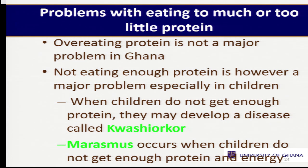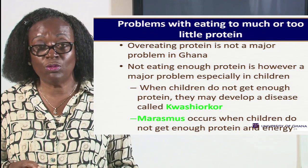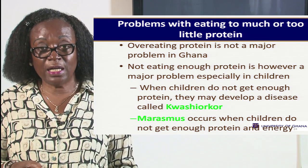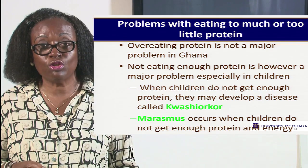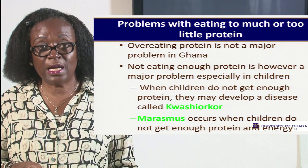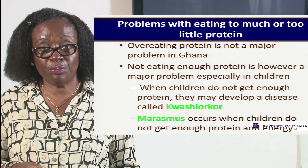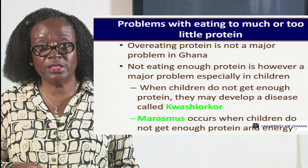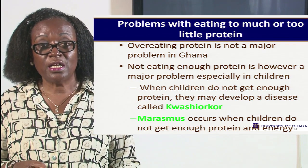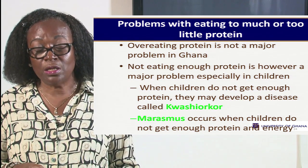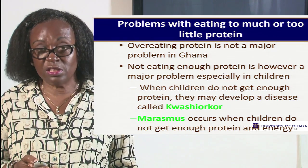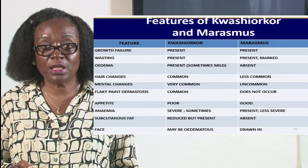Overeating protein is not a problem in our part of the world. But it might be a problem for people who have been diagnosed with kidney disease — when the body is suffering from kidney disease, one has to go down on the protein foods. However, in Ghana, our major problem with protein is not getting enough protein, and most of the time it is skewed towards our children who are under five. This manifests itself as kwashiorkor or marasmus — and together, they are known as protein energy malnutrition, which is very common in Ghana and most developing countries.